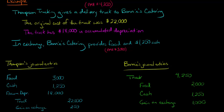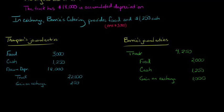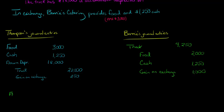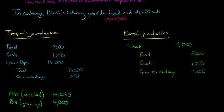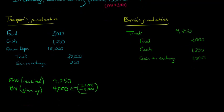If it's easier for you to think about it as a plug, that's great. But intuitively, the fair market value of what's being received by Thompson is $4,250 — that's the food and cash combined. And then the book value of what's being given up is $4,000, which is the $22,000 original cost minus the $18,000 in accumulated depreciation. So they're giving up $4,000 in book value and receiving $4,250, and of course they will have a gain of $250. Whatever helps you get the answer.